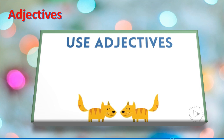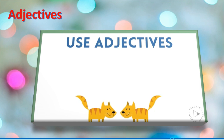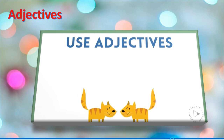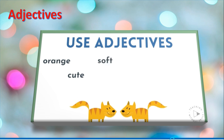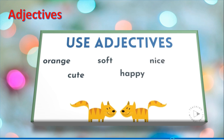Can you use adjectives to describe these cats? Adjectives can describe how something looks — so you might have said it's orange or cute. Adjectives can also describe how something feels — you said soft. They can also tell how something acts, like happy or nice. Adjectives can even tell how many, so two is an adjective also.